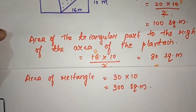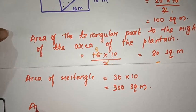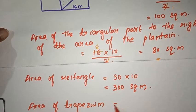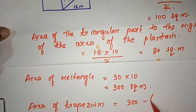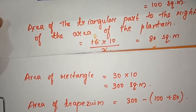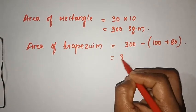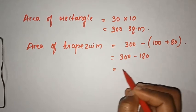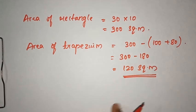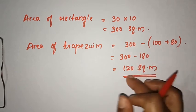What is the area of the trapezoid? We have to use minus. Area of trapezoid = area of rectangle minus the triangles. 300 minus — one triangle is 100 and the other triangle is 80. How many are the two triangles? 300 minus 180 is 120 square meters. The area of the trapezoid is 120 square meters.